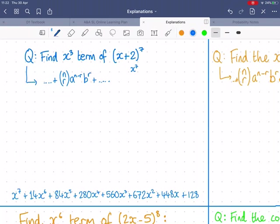This expansion will go from x to the power of seven to some multiple of x to the power of six, all the way down to two to the power of seven. In there somewhere will be an x cubed term, and we've got to find it.